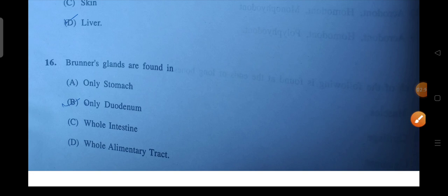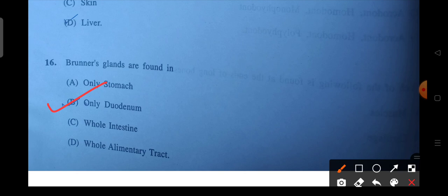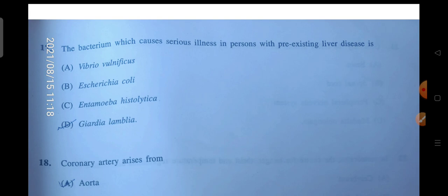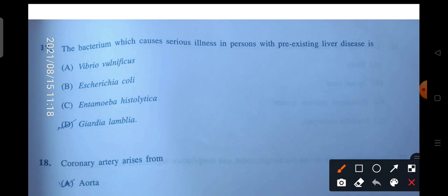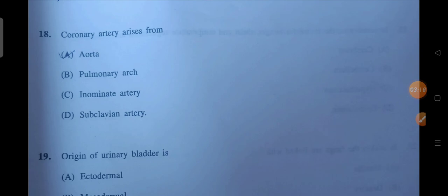Next question is Brunner's glands are only found in. So where are they found? B will be the correct, duodenum will be the correct answer. Next is the bacterium which causes serious illness in person with pre-existing liver diseases. I am not sure about this answer, but maybe A or D is the correct answer. Maybe A is the correct answer.